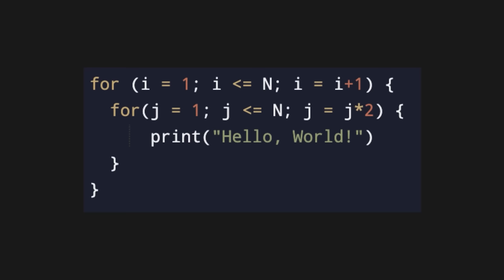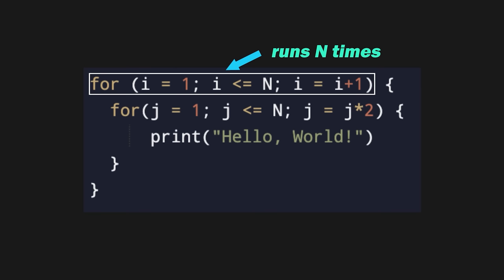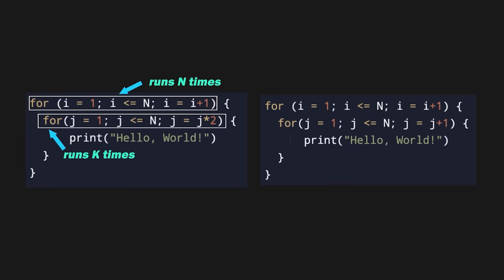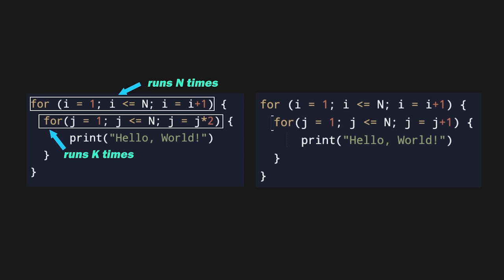To understand why that is, let's think from the first principles. Looking at the code, it's obvious that the outside for loop runs n times. Each time this outside loop runs, we go inside and run this nested loop k times. We don't know what that k is at this time, but we'll find out shortly. So in total, we print k into n hello world statements. Now if you look at this other easier and more popular piece of code, the internal loop also runs n times. But that's not the case in the code I gave you.